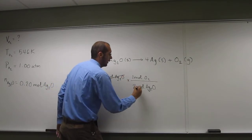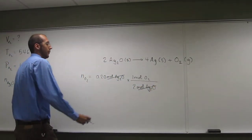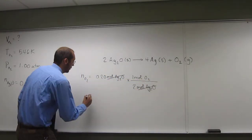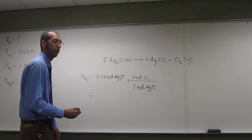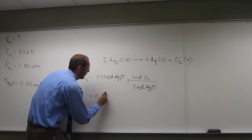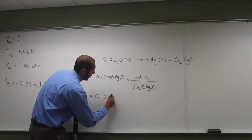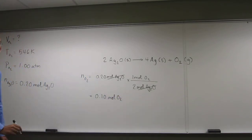When we do that, you can see the moles of silver 2 oxide cancel out, and we're getting this moles of oxygen. So, hopefully you don't have to do that in your calculator, but if you do, it's alright, because this isn't math class. So, that's how many moles of oxygen we have.